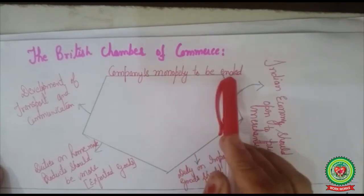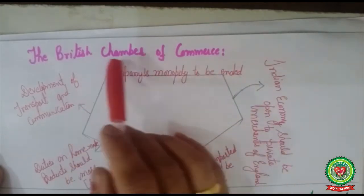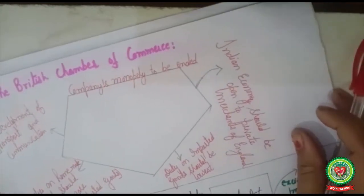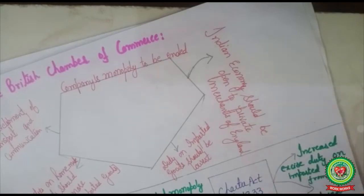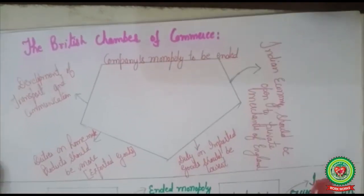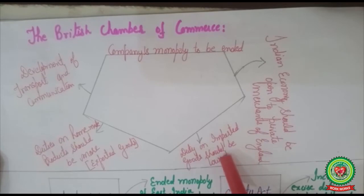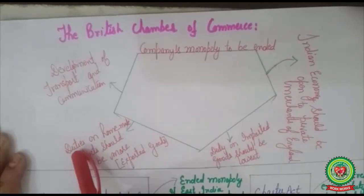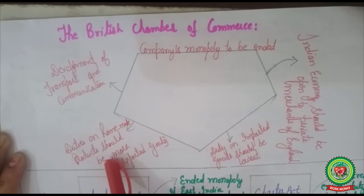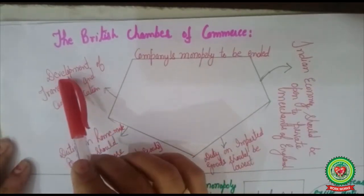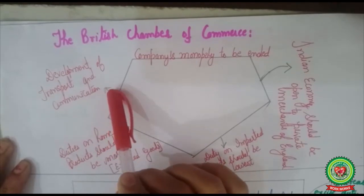The British Chamber of Commerce put forward demands before the British Parliament: first, the Company's monopoly to trade in India should be ended and all private British merchants should be allowed to trade in India; second, the Indian economy should be open to private merchants of England with equal rights to trade; third, the duty on goods imported from England to India should be low so that British goods could be sold cheaply; duties on goods sent from India to England should be high; and lastly, development of transport and communication in India to enhance trade.